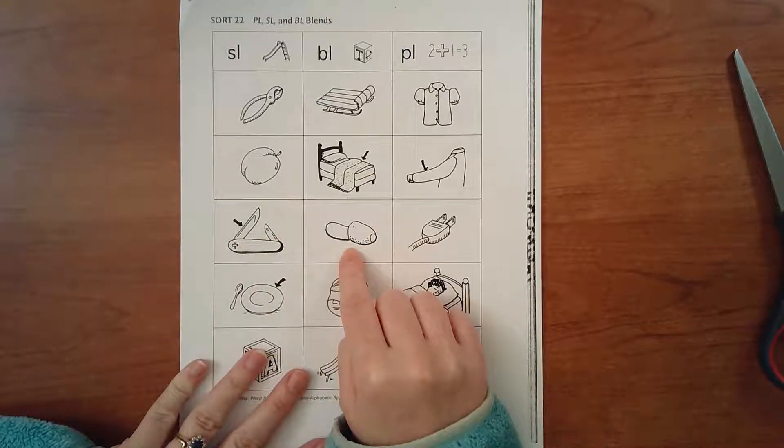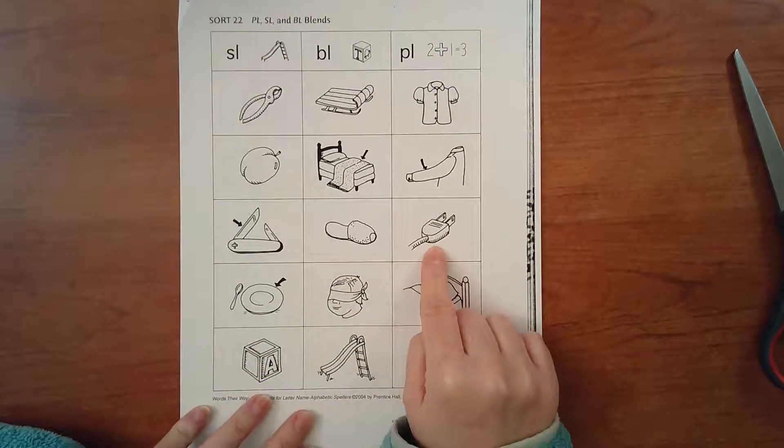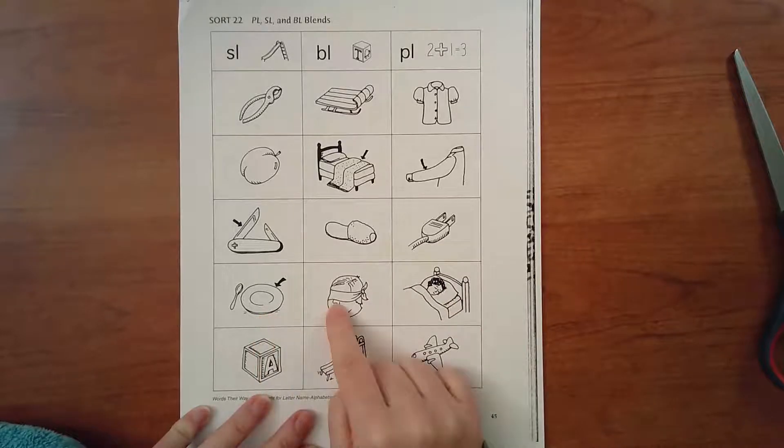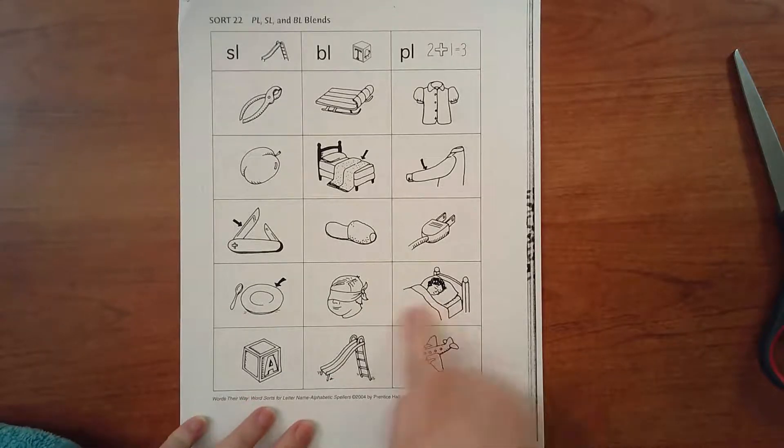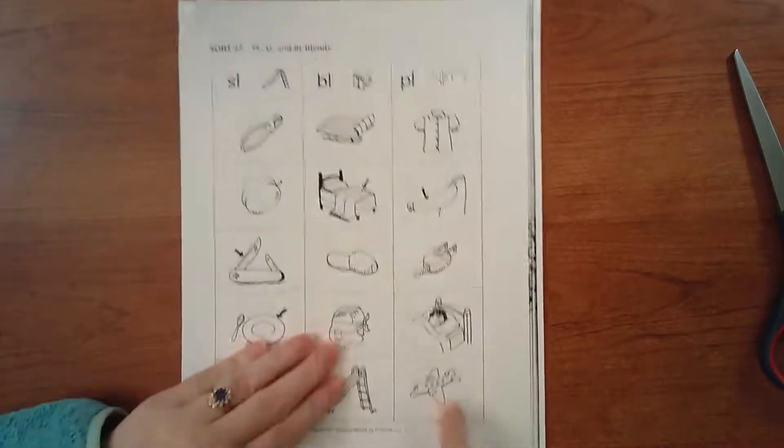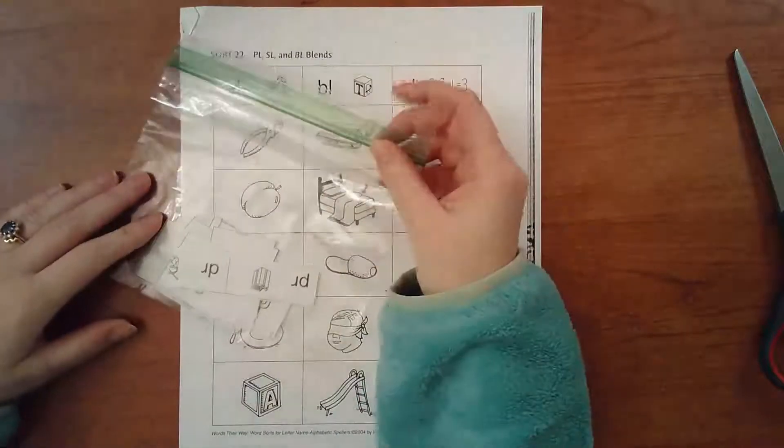These are slippers. Does it look like slippers? I know it took me a minute to figure it out. Plug. Repeat after me. Plate. You know what this is, right? Blindfold. This is an action, this person is sleeping, this is sleep. Block. Slide. So these are those that we're doing for today.